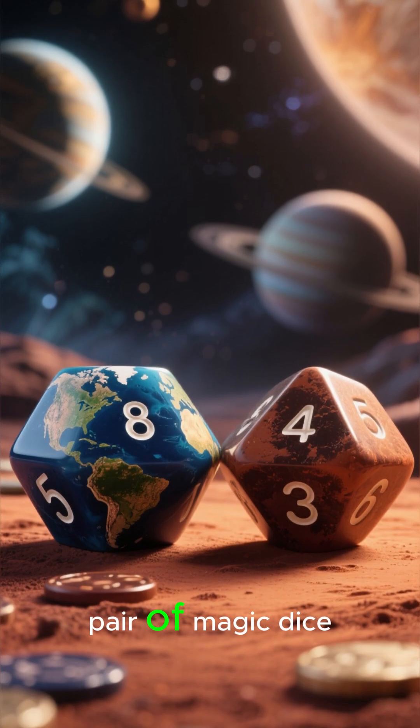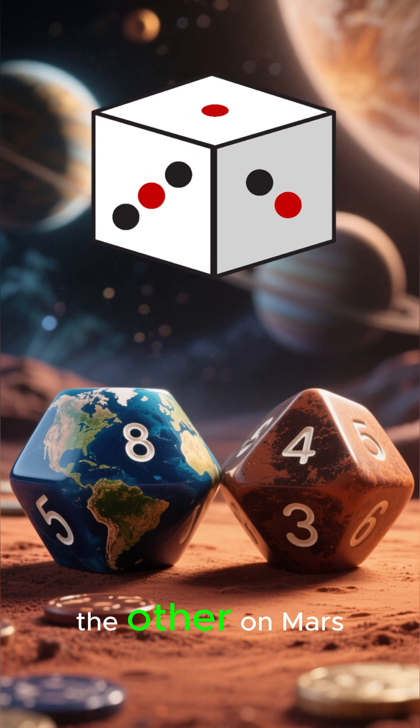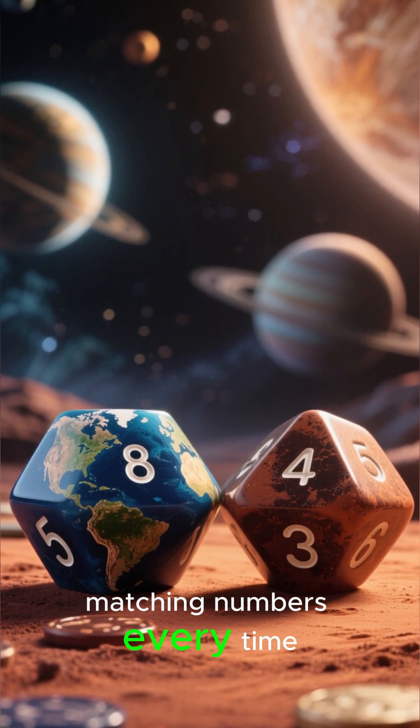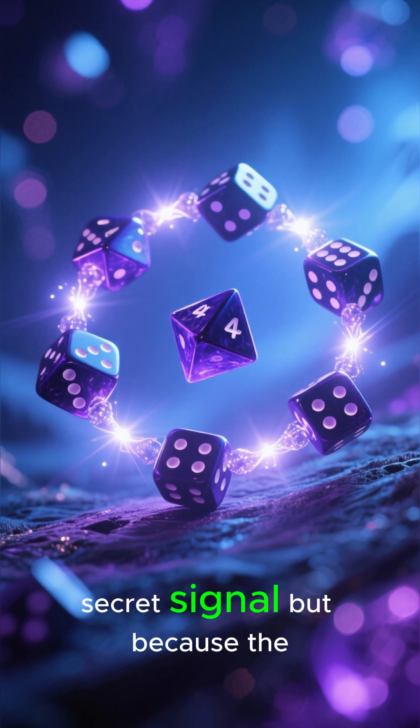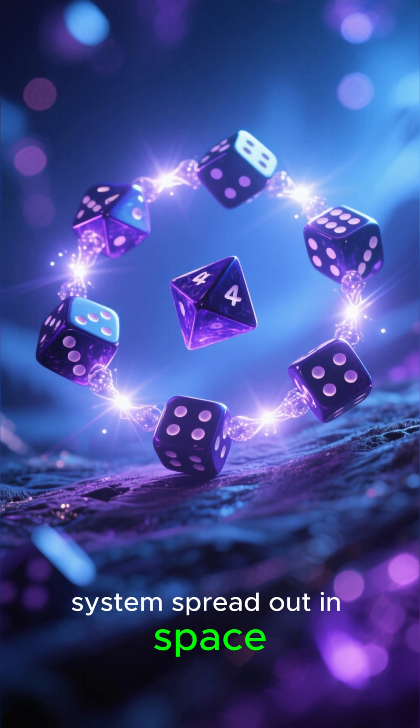Think of it like a pair of magic dice. Roll one on Earth and the other on Mars, and both land on matching numbers every time. Not because one sends a secret signal, but because the two dice are really one system spread out in space.